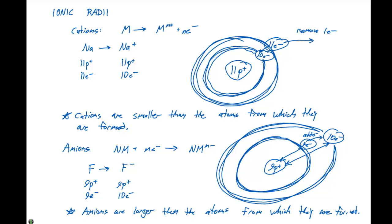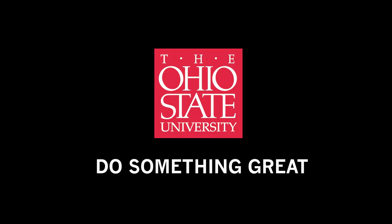So we can now look at something called an isoelectronic series, which we'll talk about in the next video, which is going to allow us to arrange cations, anions, and atoms in order of increasing ionic radii. We'll see you next time. Bye.